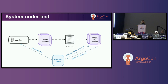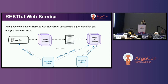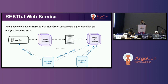Let's see how we can apply Rollouts to each of these components. We'll start with the RESTful web service, which is a very good candidate for Rollouts with a blue-green deployment strategy. Why? Because it can be tested without any live traffic, and we are going to reuse some of the tests we already have. We need to split up the tests a bit and have a dedicated container with component tests for this API.